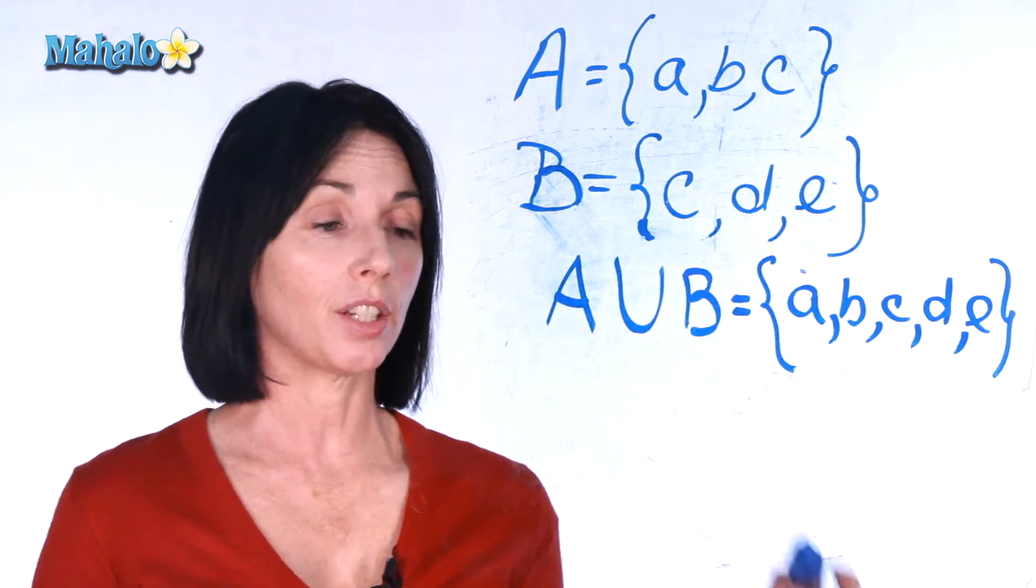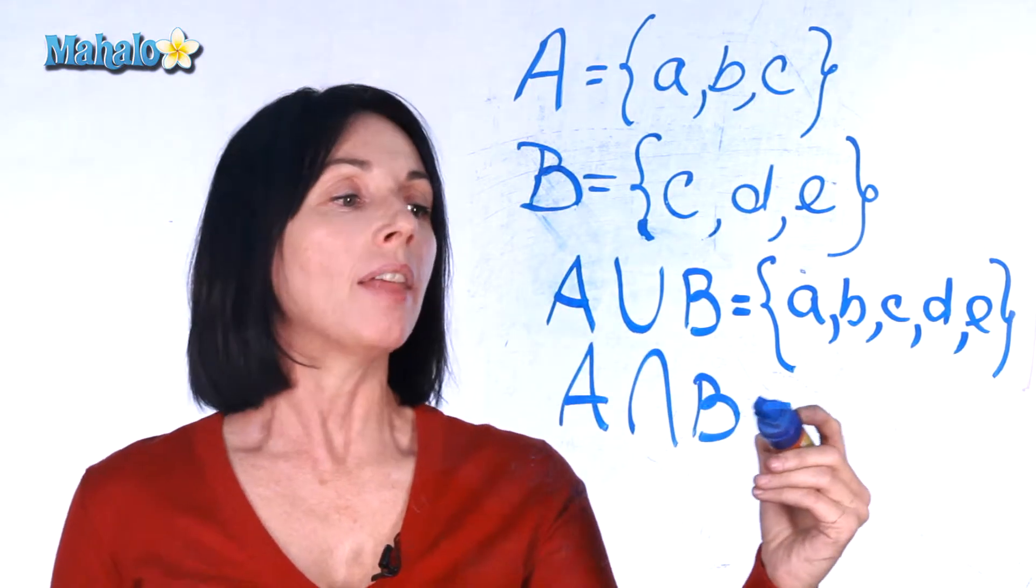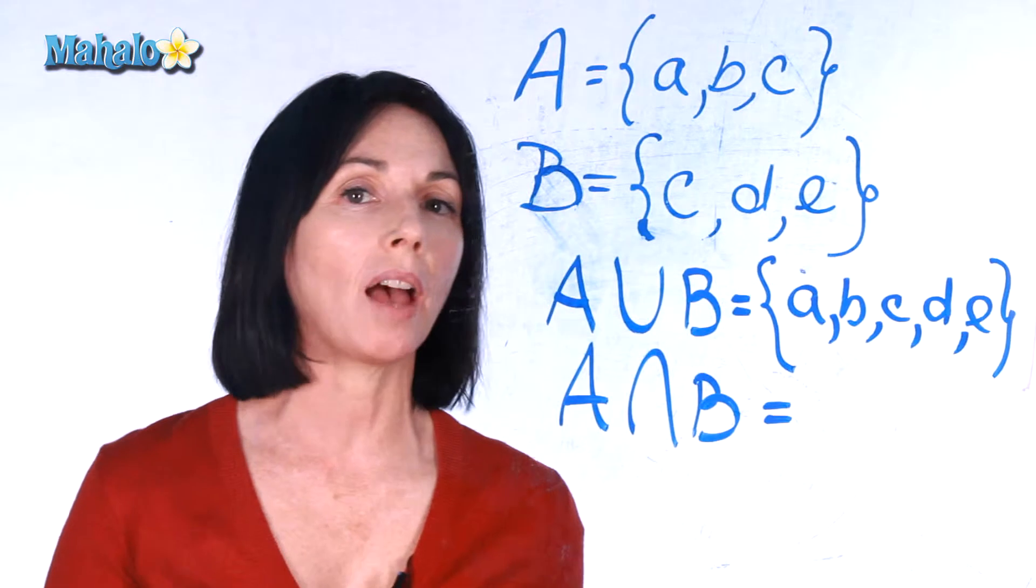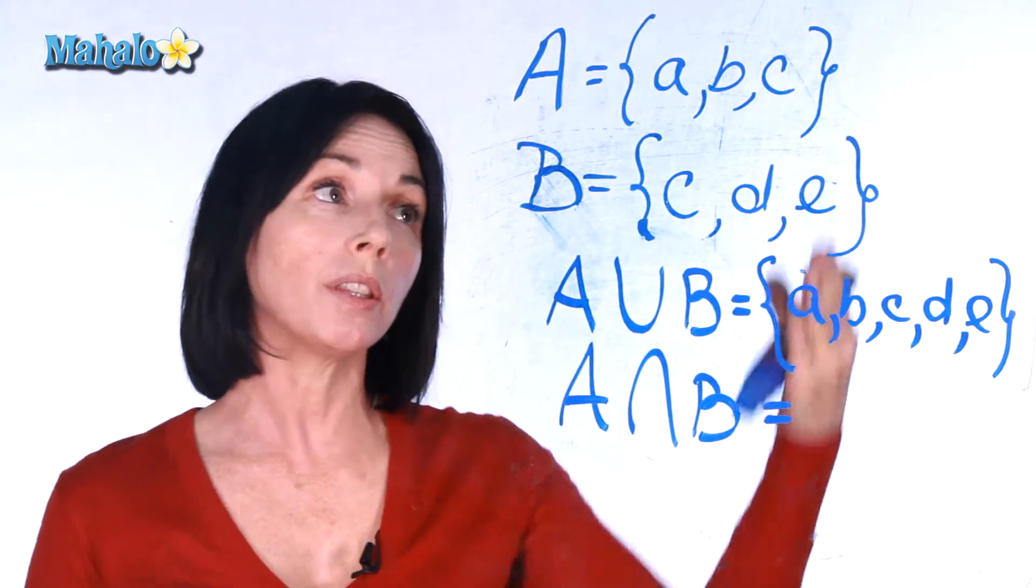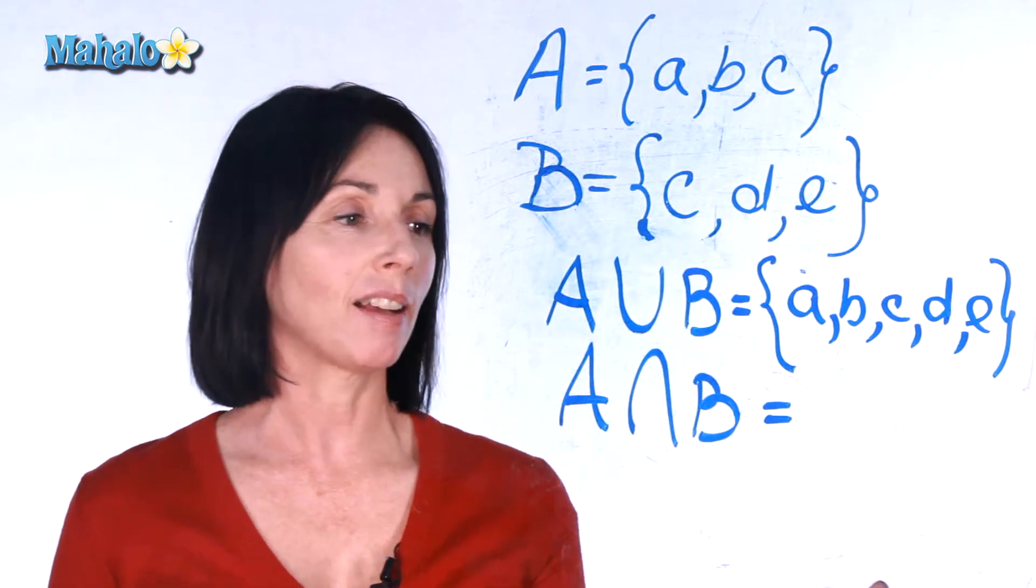Now if we take the intersection of A and B, that means we only take what they have in common. What do these two sets have in common? They just have the element c in common.